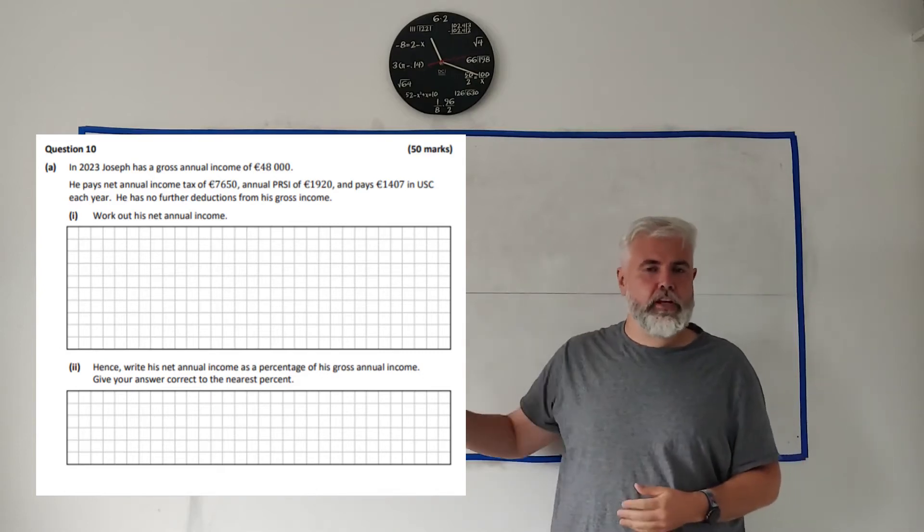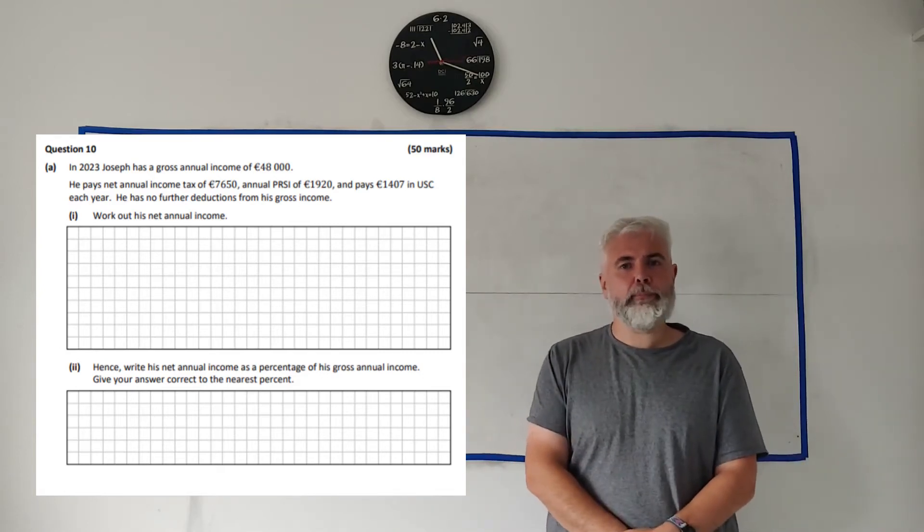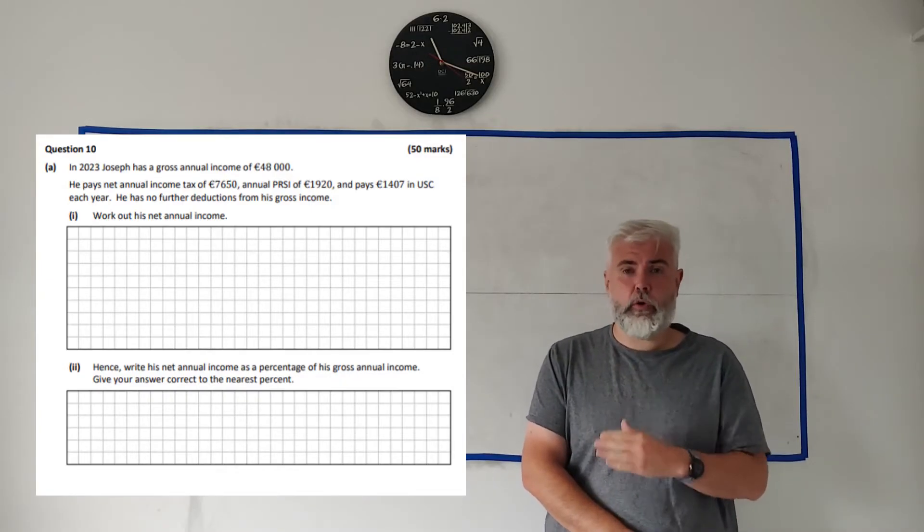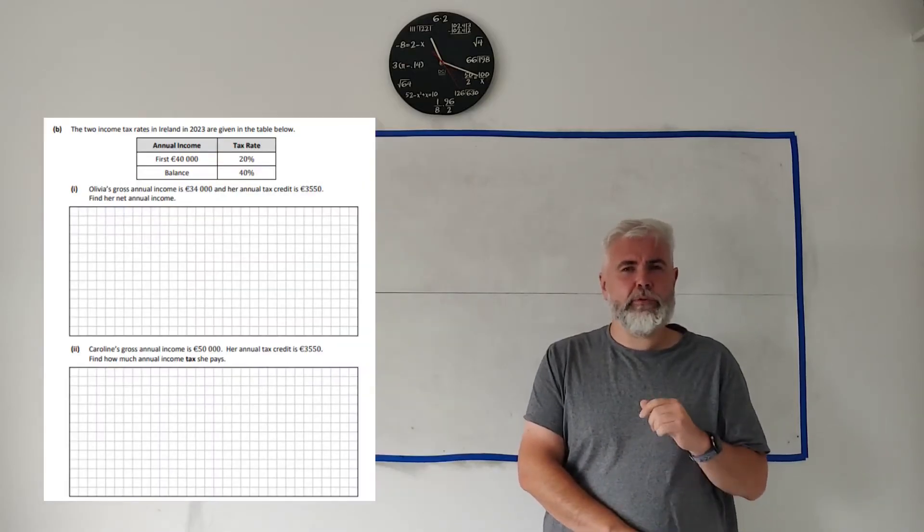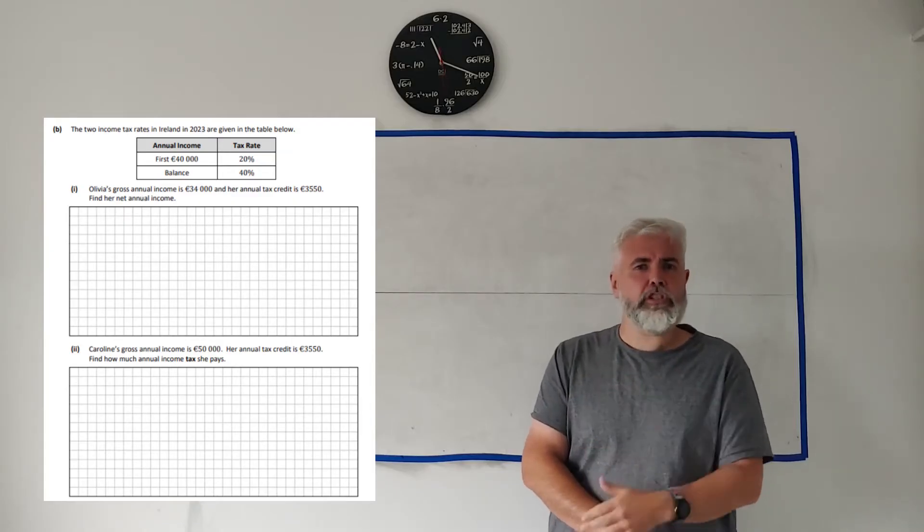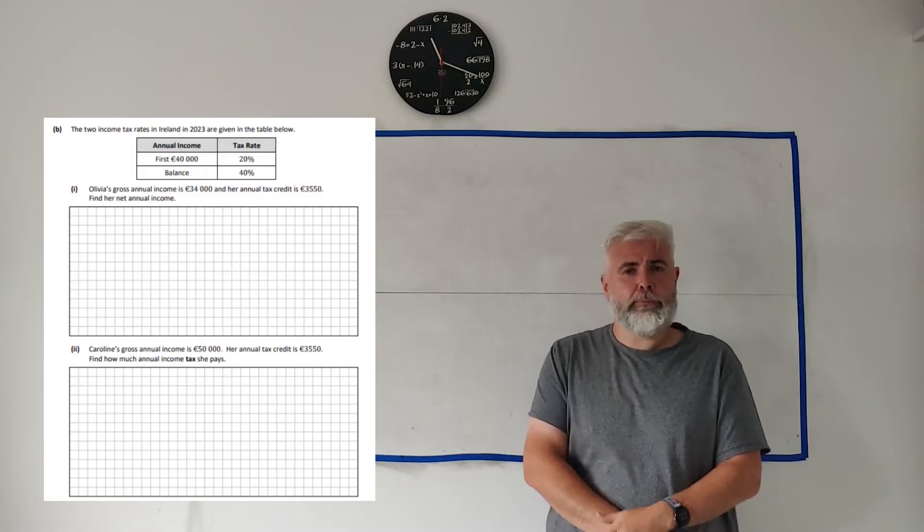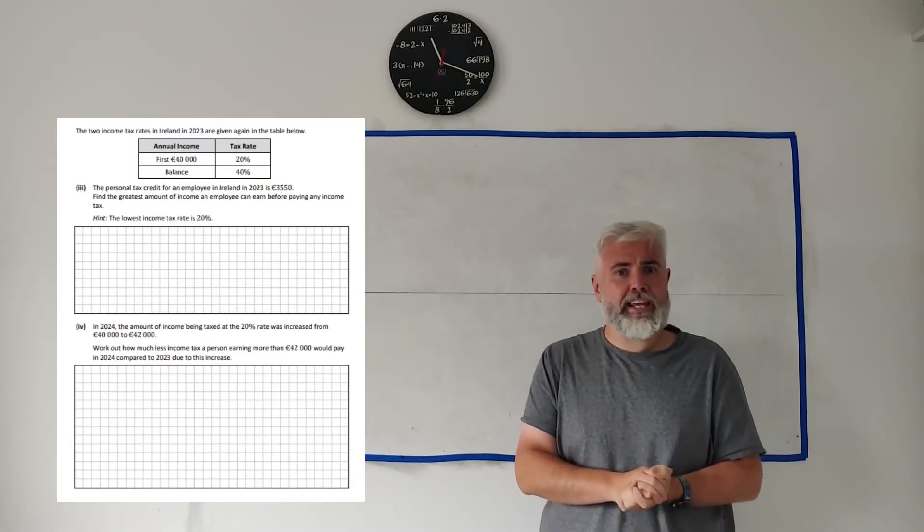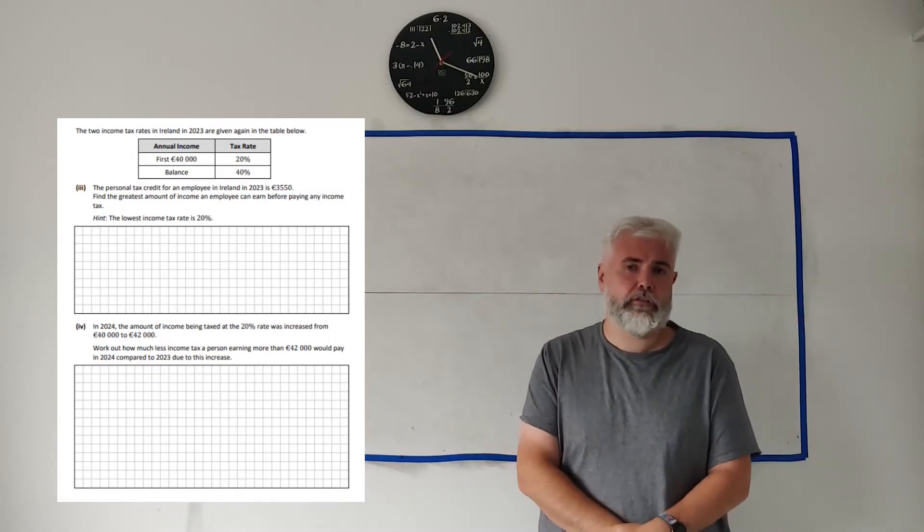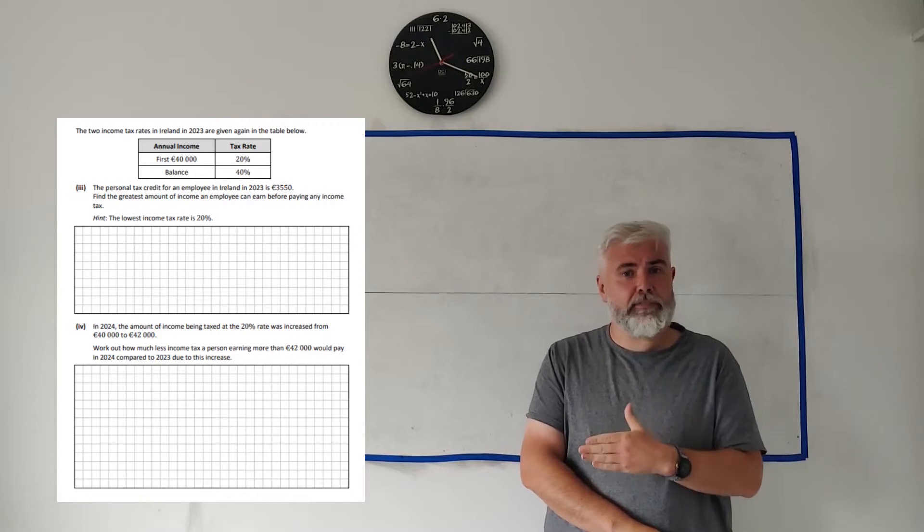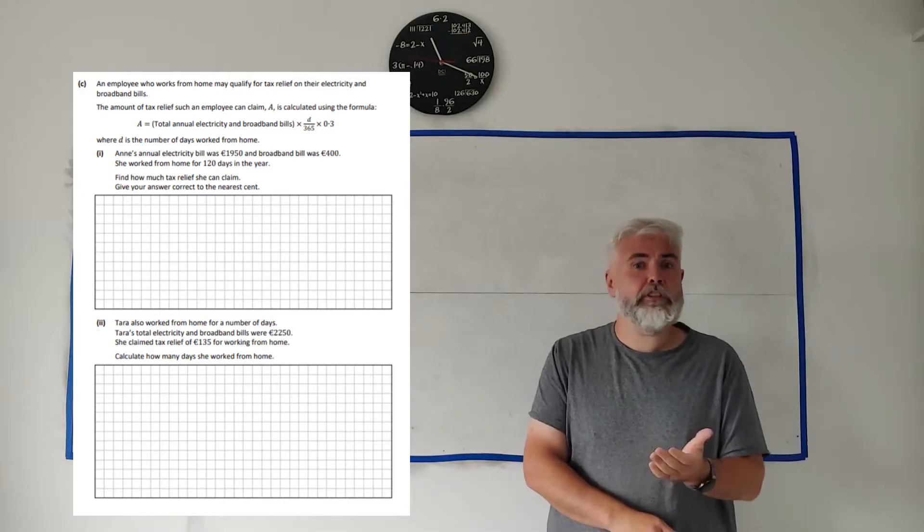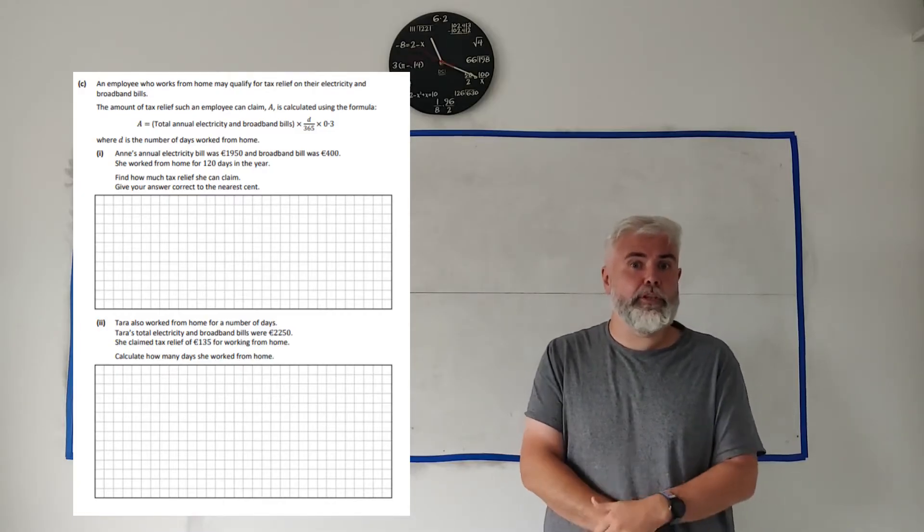In this video I'll be working through Question 10 from Paper 1 of the Ordinary Level Leaving Cert 2004. If you're looking for a different question from this paper, there should be a link to the playlist in the description. I'll be doing this on a whiteboard like you're used to in the classroom, but remember this is YouTube so take advantage of those tools - pause, rewind, fast-forward, or slow it down. If you find this useful, I'd appreciate a like or subscribe, and sharing it with someone else doing the Leaving Cert helps the most.